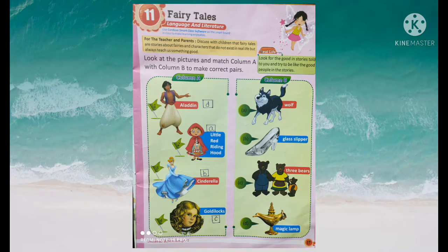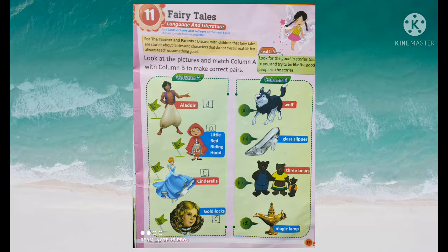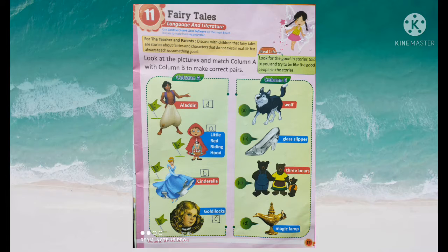First picture: Aladdin. In Aladdin's story there is a magic lamp. The magic lamp does not exist in real life, but it grants wishes. For Aladdin's story, the answer is option D — the magic lamp.